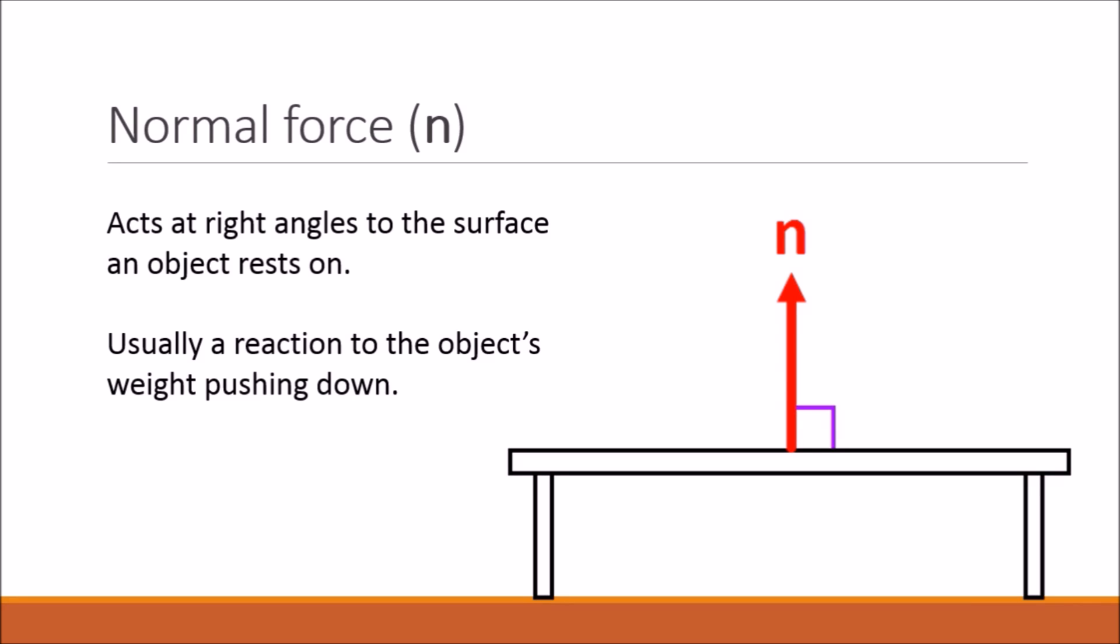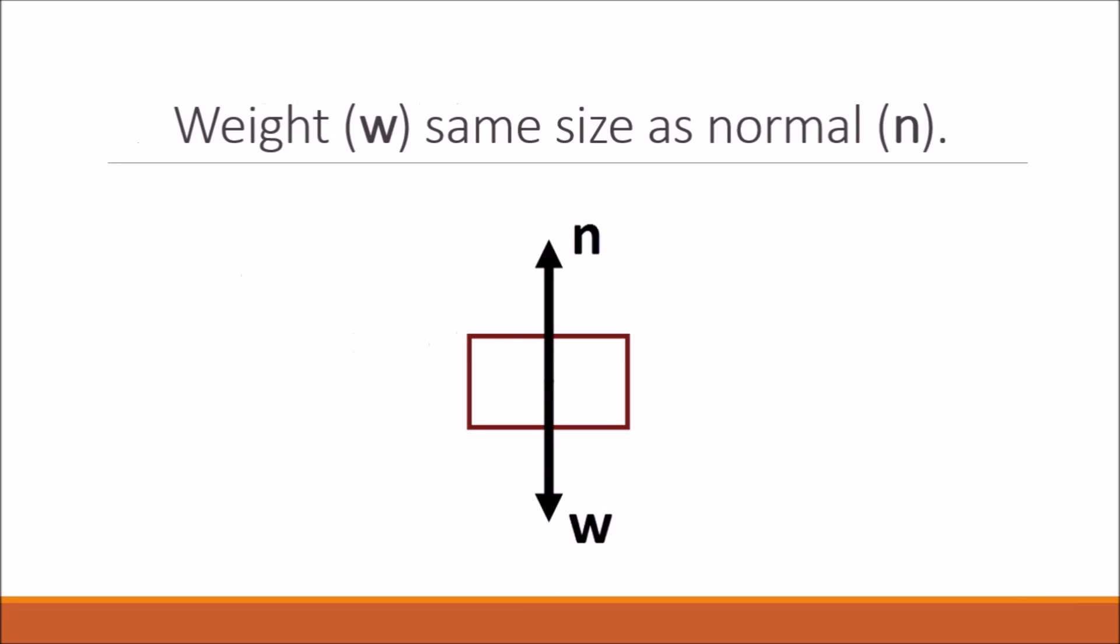Normal force always acts at right angles to the surface an object is resting on. My desk was horizontal last time I checked, so the normal force vector must point straight up. The relative sizes of these vector arrows are also important. I have drawn them with exactly the same magnitude. Is that correct?